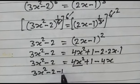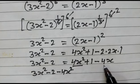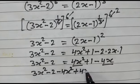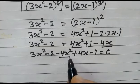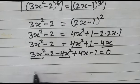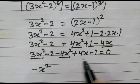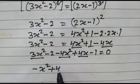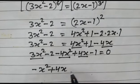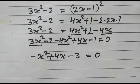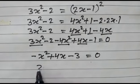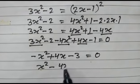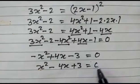So 3x squared minus 2 is equal to 4x squared plus 1 minus 4x. Rearranging: 4x squared minus 4x squared plus 4x plus 1 minus 1 minus 3 equals 0. Taking minus signs across: minus 4x squared plus 3x squared gives x squared, plus 4x, minus 3 equals 0. If we multiply the whole equation by minus 1, we get x squared minus 4x plus 3 equals 0.